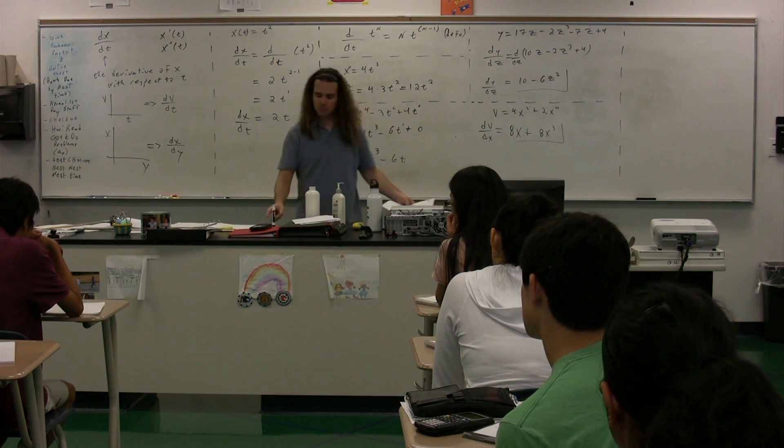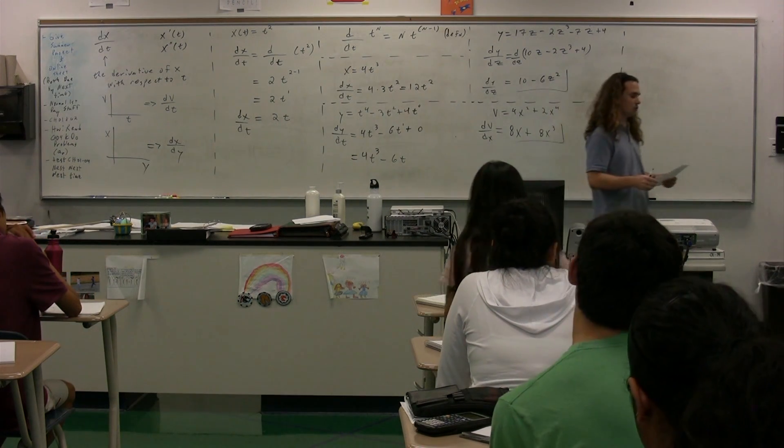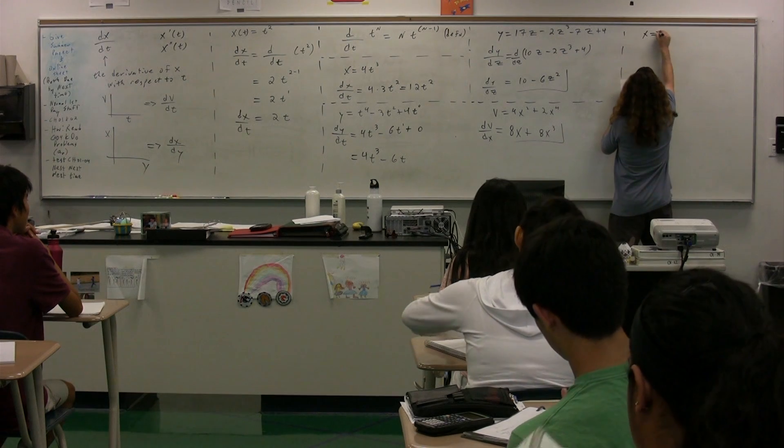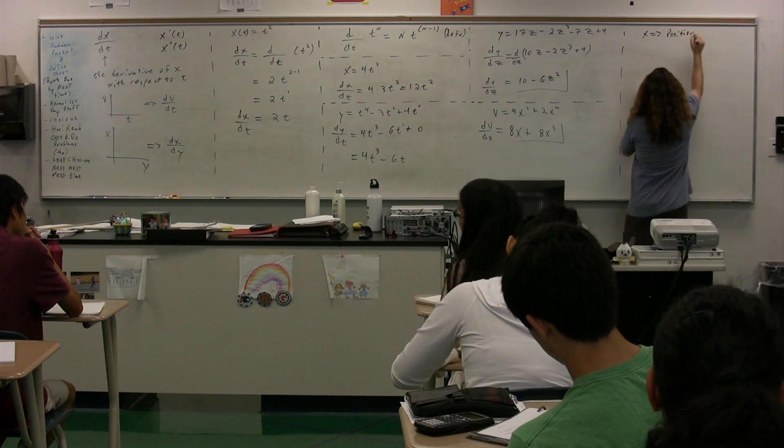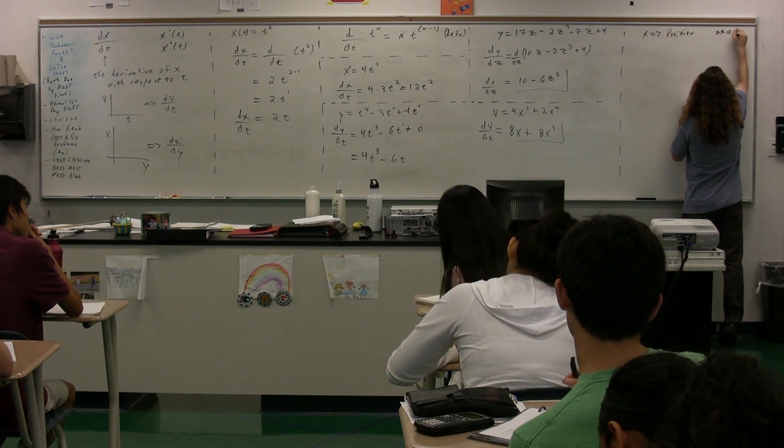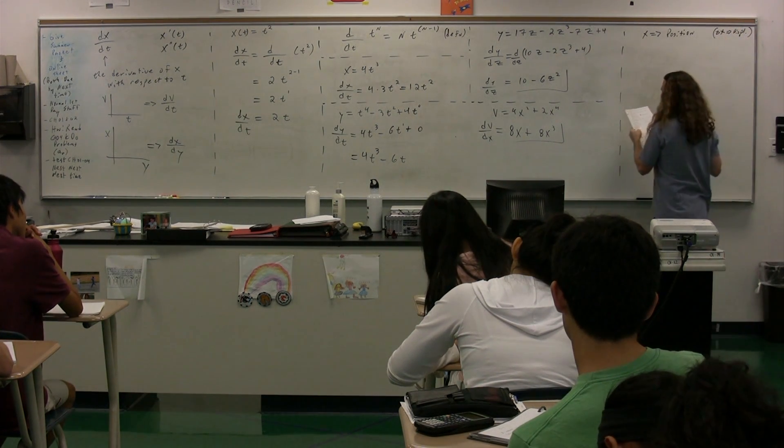So now that was basic, you know, just math. Now we're going to take and apply this to physics. So x equals position. That is what x means. And clearly, delta x was displacement.